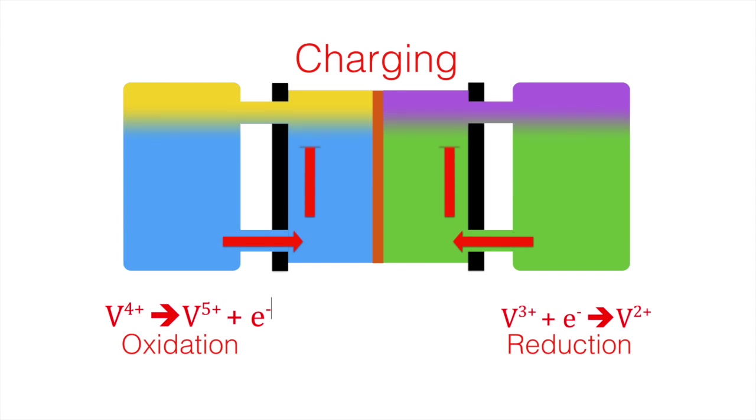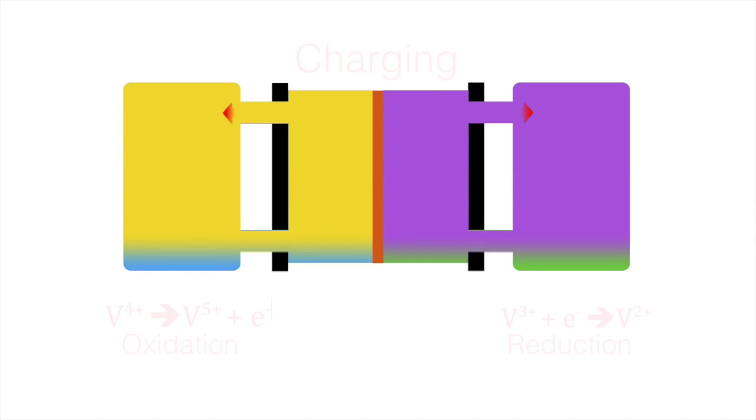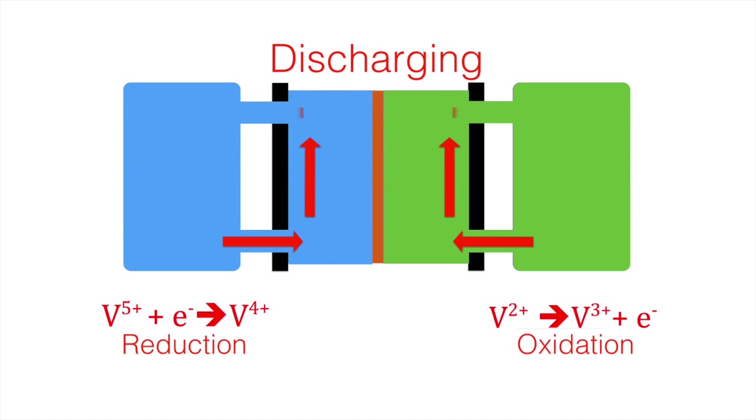While charging, V4 gets oxidized to V5, and the color changes from blue to yellow in the positive tank. In the other tank, V3 gets reduced to V2, and the color changes from green to purple. The process is reversed while discharging.